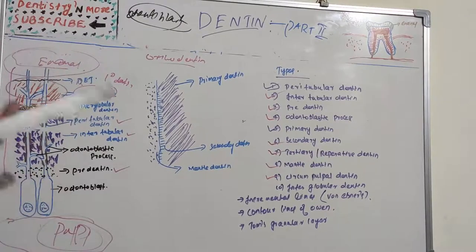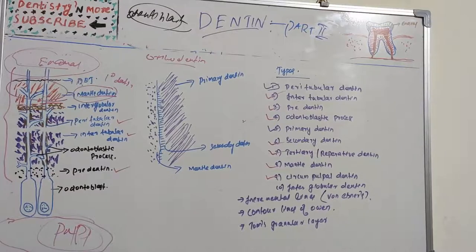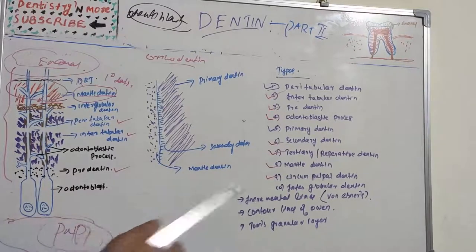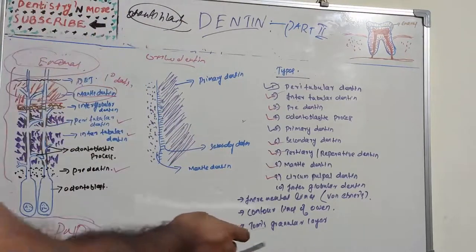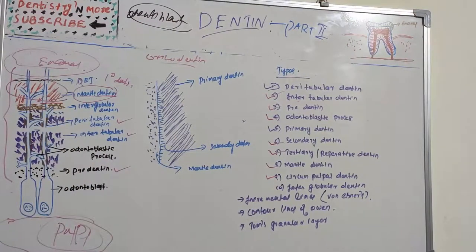The incremental lines of von Ebner, also called imbrication lines, appear as fine lines or striations in dentine — similar to the incremental lines of Retzius seen in enamel. These lines reflect the daily rhythmic, recurrent deposition of dentine matrix as well as hesitation in the daily formative process. Mineralization occurs by continuous addition of minerals, and those lines represent that ongoing deposition. This is the von Ebner's line in dentine, analogous to incremental lines of Retzius in enamel.